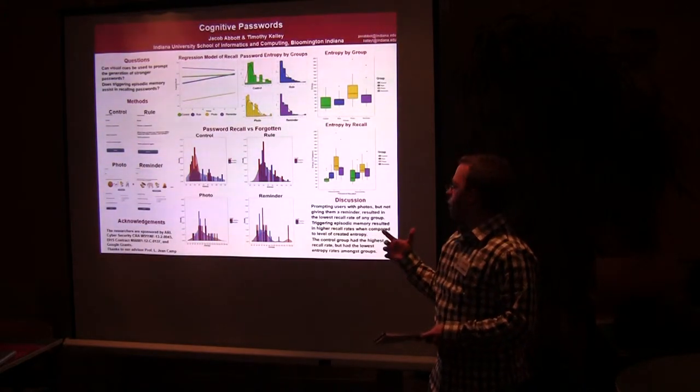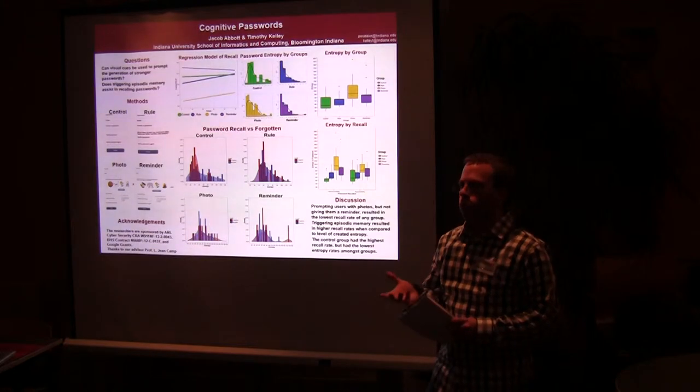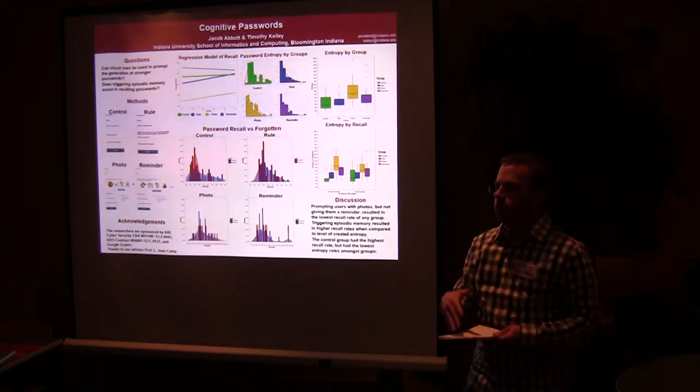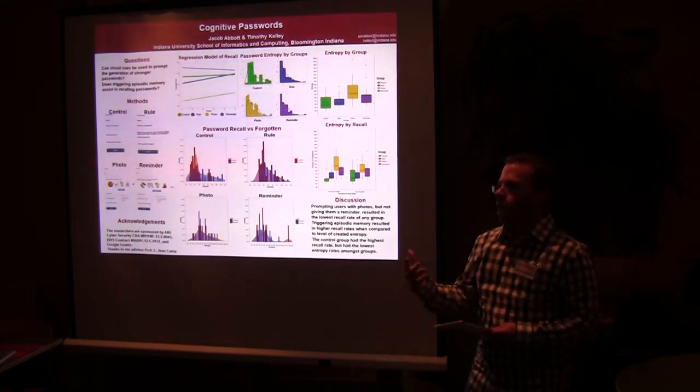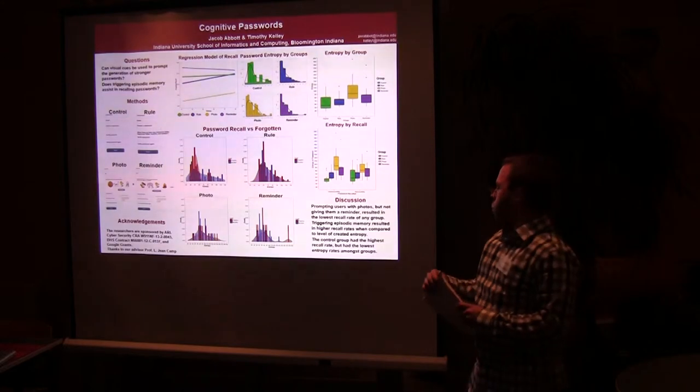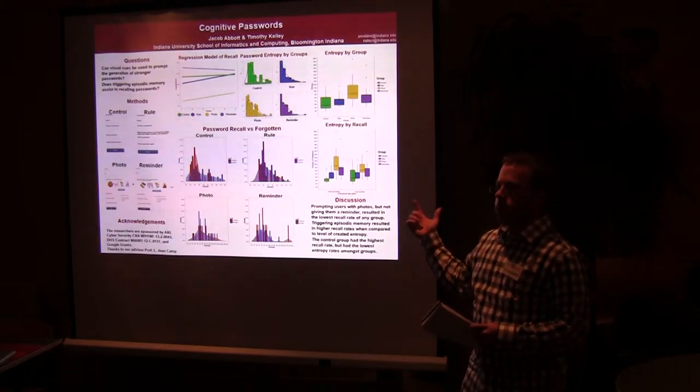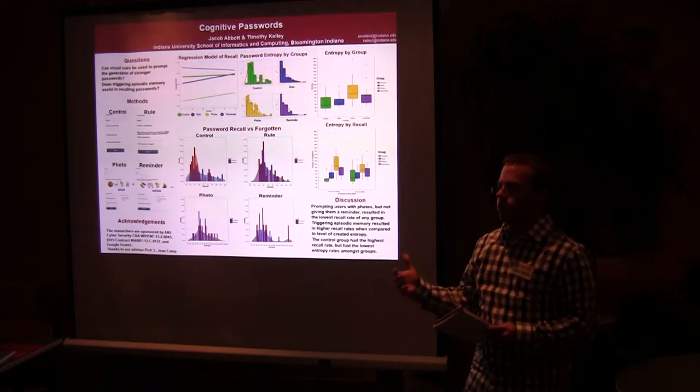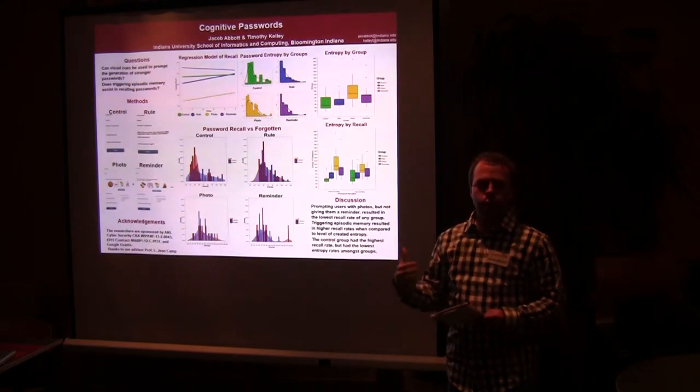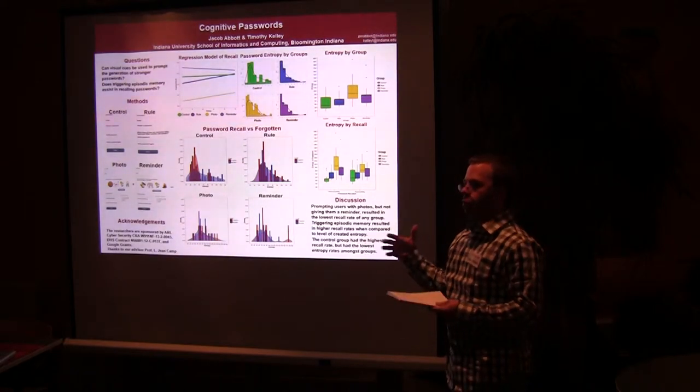With the rule group, we actually found that a large majority of them stayed at the minimum amount of length requirement. So the vast majority of them had eight characters in length and just barely met. But that can also be said for the control group as well. When we got to the photo group, we actually found that they had the highest values for the entropy from the different characters that they built up and the length of their passwords. And then right behind it was the reminder group, which was actually slightly less than the photo group, where the reminder actually didn't create quite as strong.